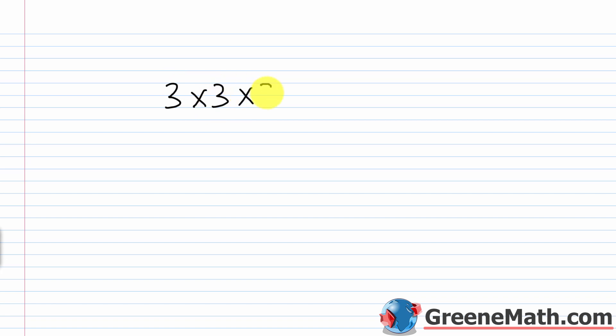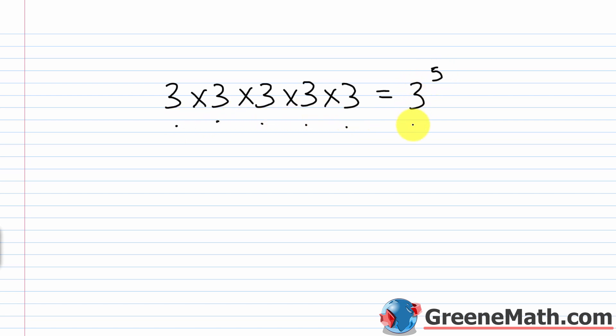Before we get into the main content, let's briefly review exponents. Recall that at this stage we're using exponents to conveniently notate repeated multiplication of the same number. For example, something like 3 times 3 times 3 times 3 times 3 — I have 5 factors of 3, so I can write this as 3 to the fifth power. The number being multiplied by itself is the base, which is 3 in this case. The smaller number in the top right-hand corner, the 5, is the exponent, telling me I have 5 factors of 3.